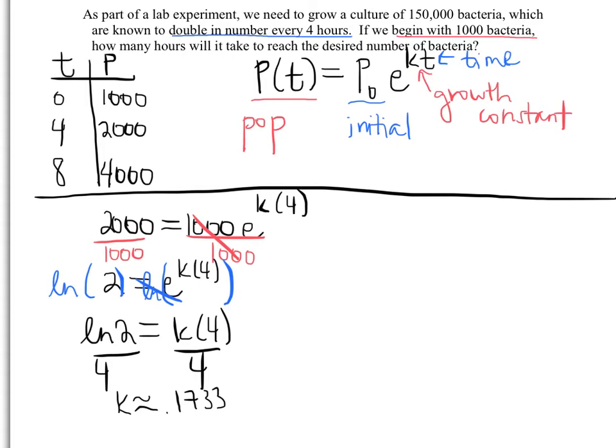Now what are we trying to do with this problem? If we go back and read it, we need to grow a culture of 150,000 bacteria. So that's a population value after a certain amount of time which is what we're trying to figure out. We're going to have 150,000 equals our initial value which is 1000, e to the k which we just figured out, 0.1733, times our time which is t, and we're going to solve it pretty much the exact same way we just solved the last one.